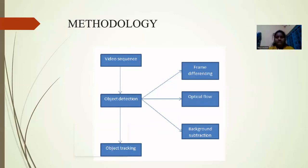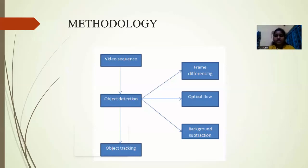In frame differencing, the color frame is converted into a gray frame. The gray frame is used because it has only one intensity channel, so we can detect movement more easily compared to RGB, which has three different intensity channels.